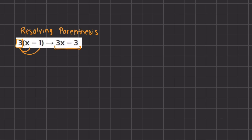If we distribute this 3 into our parentheses, we have 3 times x, which gives us 3x, and 3 times negative 1, which gives us negative 3. So 3x minus 3 is the resolved, or simplified, version of this expression. This was the last simplification method, and now we will move on to the manipulation methods.